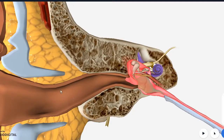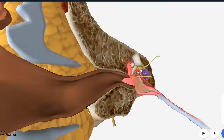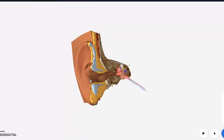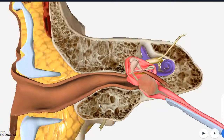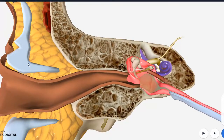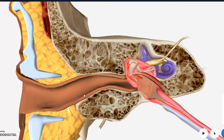A small introduction to the external auditory meatus, which connects the middle ear to the auricle outside. This meatus — this tube-like structure — is a bit S-shaped. The outer two-thirds is cartilaginous; you can see the cartilage here, which is the same cartilage that makes up your auricle, with a lot of fat as well. While the remaining inner one-third is bony.